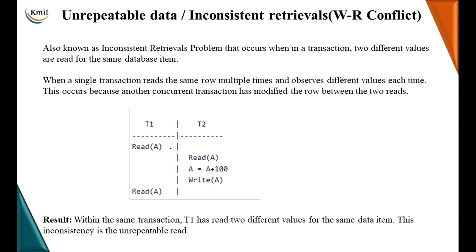Here, transaction T1 reads a value of A. Maybe it was 100. While transaction T2 also reads a value of A which is 100. It updates it as 200 and makes the modification and writes it as 200. So, in the database, the value of A now is 200. Meanwhile, due to some reason, transaction T1 is reading the value of A again which is going to be 200.